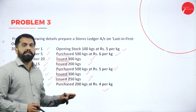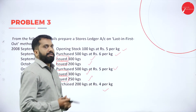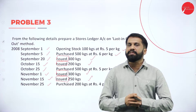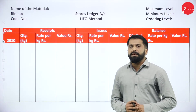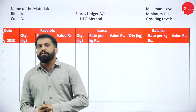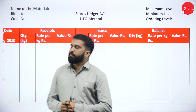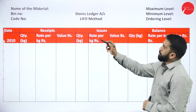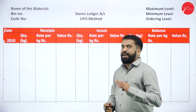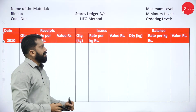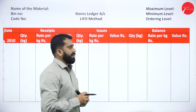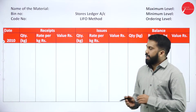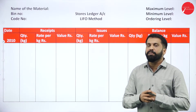We will work out the solution. I suggest you also pause the video, prepare a column in your book, then solve the problem along with me. This is your format for LIFO — the same format we did for FIFO, we will use for LIFO also. The store ledger account includes: LIFO method, name of the material, bin number, code number, maximum level, minimum level, ordering level, and below that — receipt, issue, and balance columns.